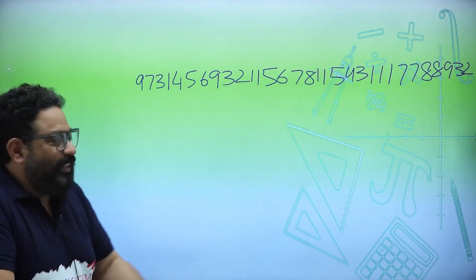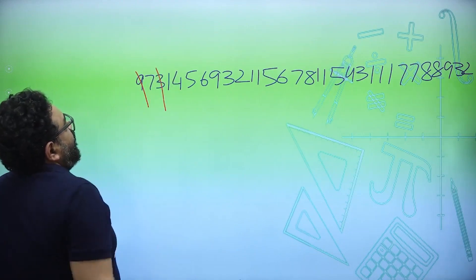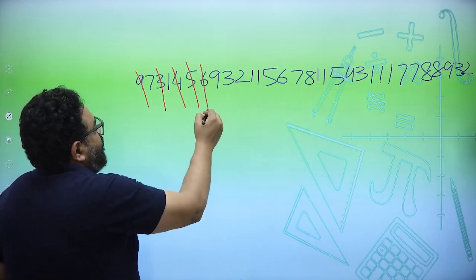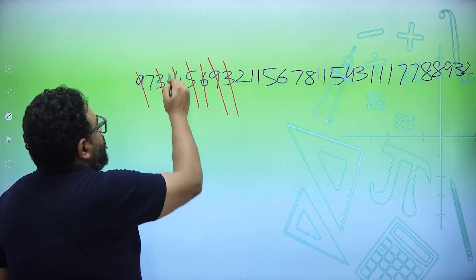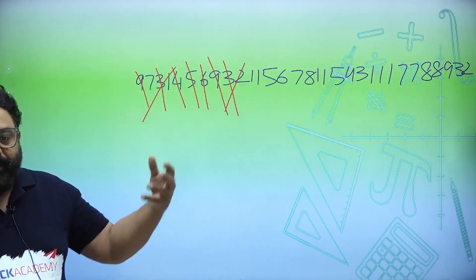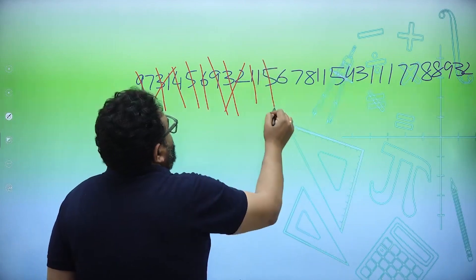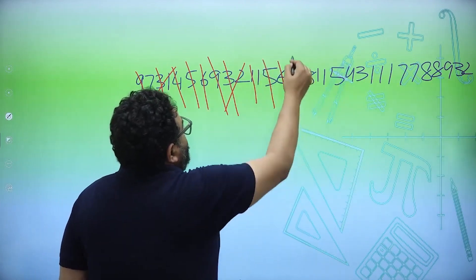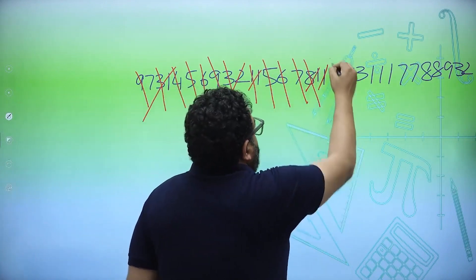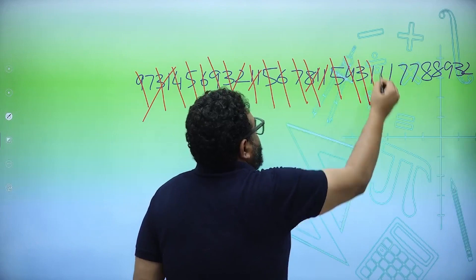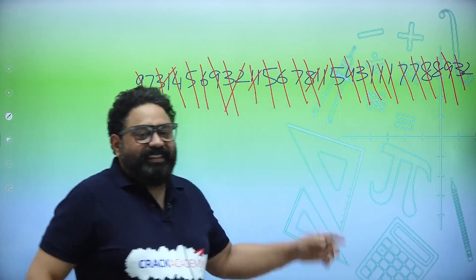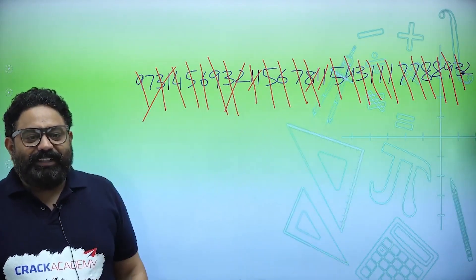Ignore multiples of 3: 9, ignore; 3, ignore; 4+5=9, ignore; 6, ignore; 9, ignore; 3, ignore; 1+2 — ignore (multiple of 3); 1+5=6, ignore; 6, ignore; 7+1=8, ignore; 1, 1, 1 — ignore (triplet); 7+8=15, ignore; 7+8=15, ignore; 9, ignore; 3, ignore. You're left with just 2. This number when divided by 3, the remainder is 2.